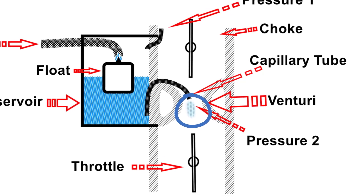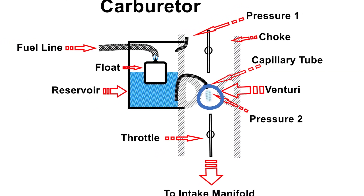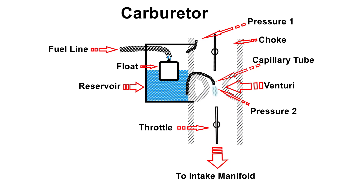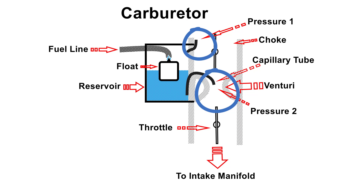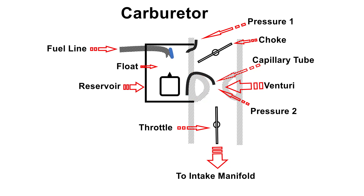The capillary tube only provides fuel when the engine is turning or running. When the engine is not running, there is no difference between the two pressure points, so the fuel is not flowing through the capillary tube. When the fuel runs out, the float drops to the bottom, and the fuel line and the capillary tubes remain open. The opening of the fuel line and the capillary tubes are the biggest problem for HHO fuel.